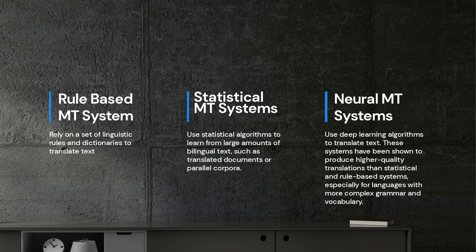Rule-based MT systems rely on a set of linguistic rules and dictionaries to translate text. These systems work well for languages with relatively simple grammar and vocabulary, but they struggle with languages that have more complex grammar and vocabulary.